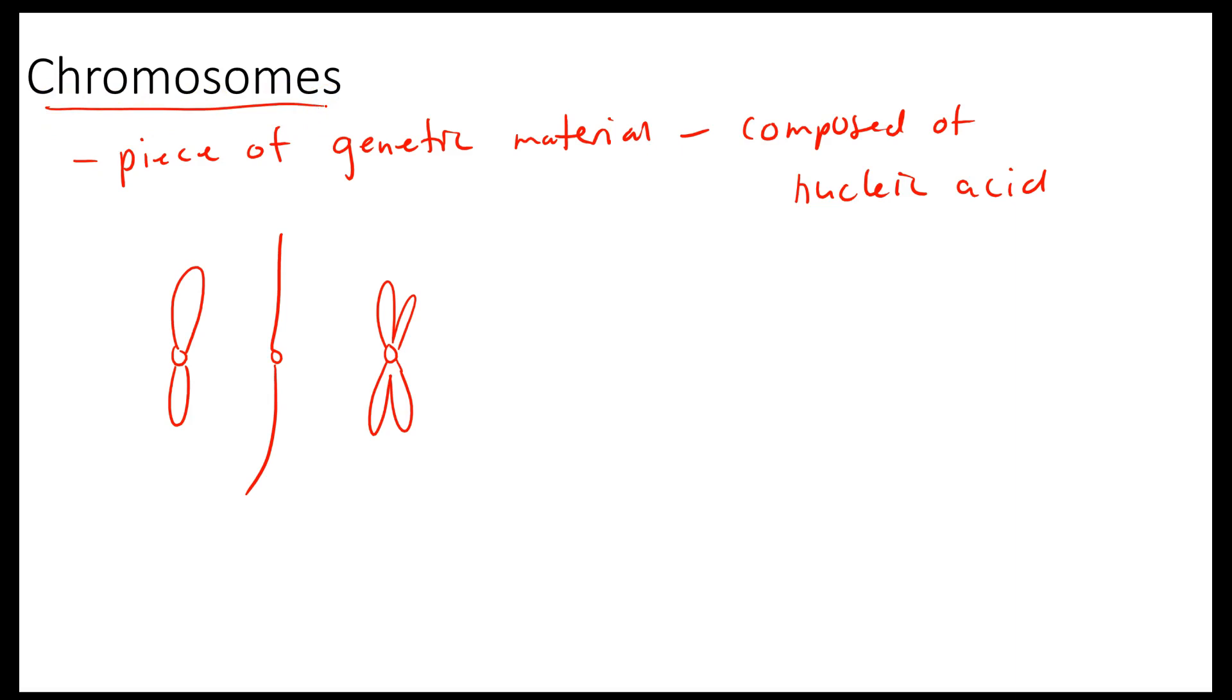So the first one that you'll encounter is chromosome. A chromosome is a piece of genetic material, and it's composed of nucleic acid. So you've seen chromosomes drawn a couple of different ways. This is a chromosome. This is a chromosome. This is often how you see chromosomes, which I believe sort of presents some problems for understanding. But all of these are drawn examples of chromosomes.